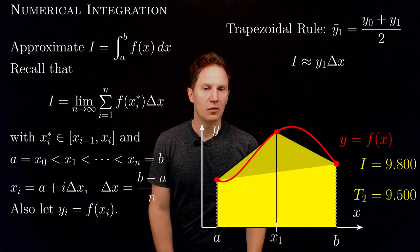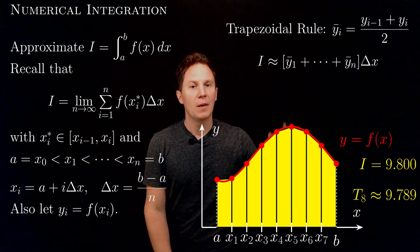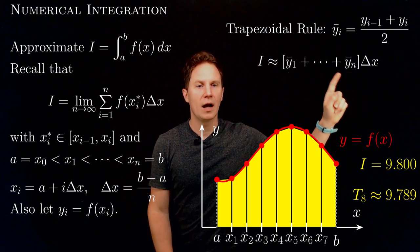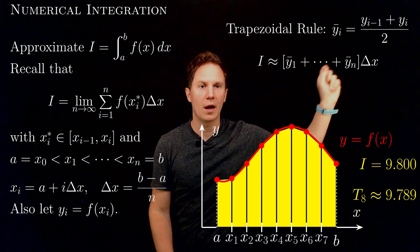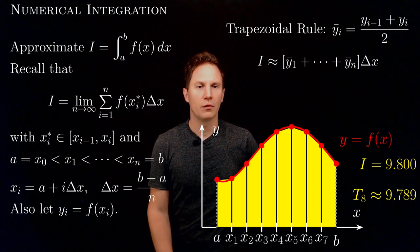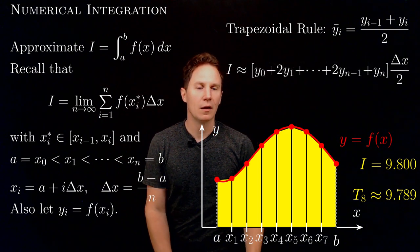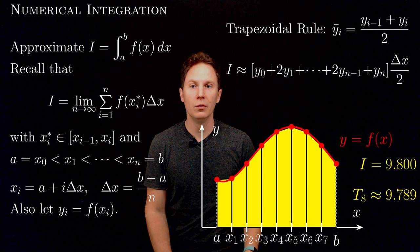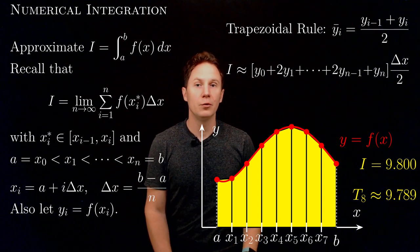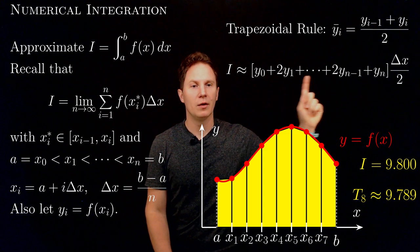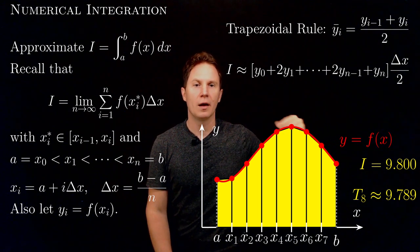When we have n trapezoids, the formula modifies into this sum. Plugging in the expression yi minus 1 plus yi over 2 for each average y value, and taking the factor of one half outside so we have delta x divided by 2, we get the trapezoidal rule formula: delta x over 2 multiplying the sum of function values, where the endpoint values at a and b have a multiplier of 1, and the in-between values have a multiplier of 2.